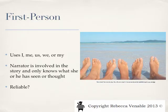As we look at the types of point of view, we're looking specifically at narration. First-person narration uses I, me, us, we, or my. The narrator is involved in the story, and thus they only know what she or he has seen or thought.